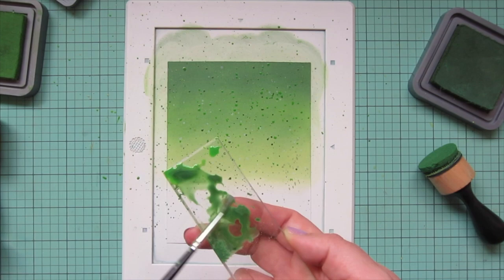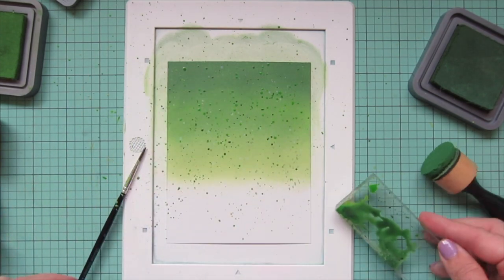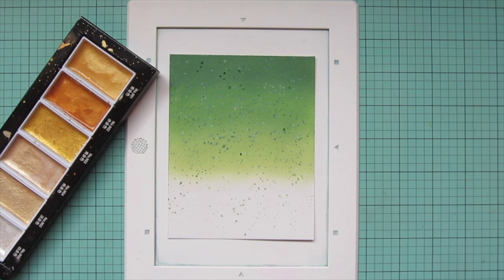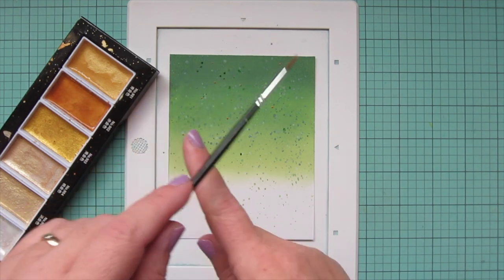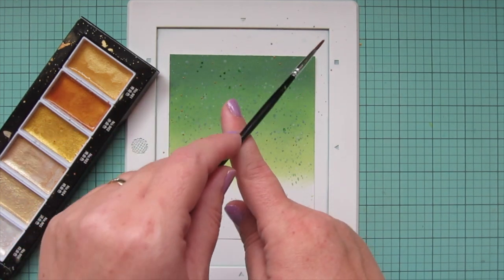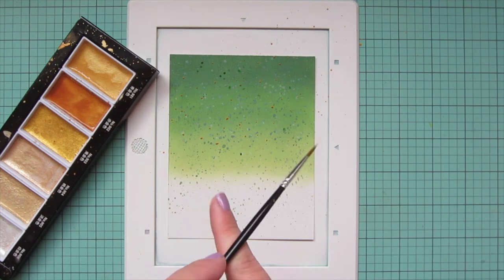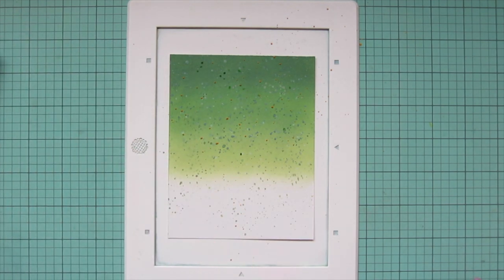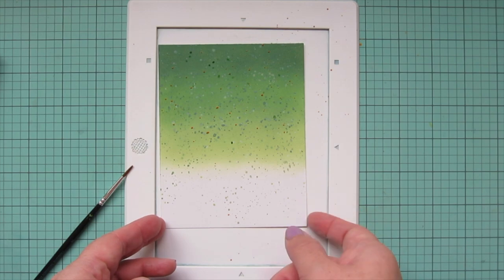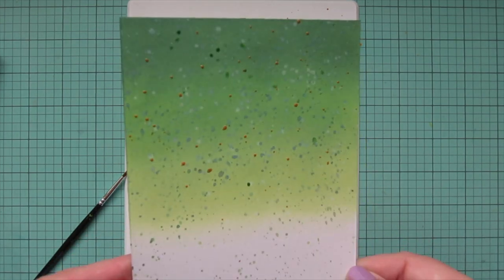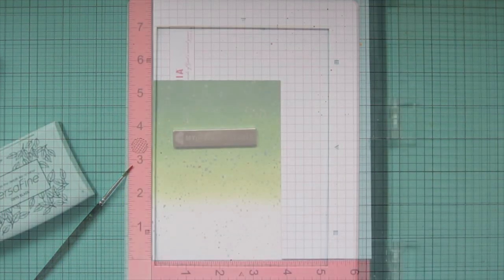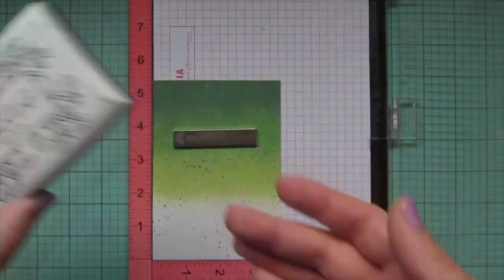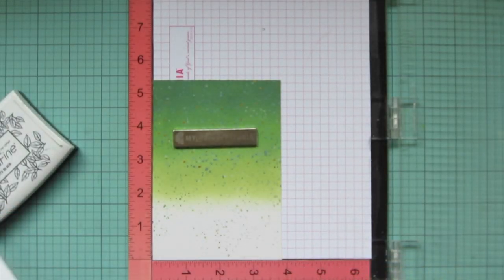And then once I'm happy with how that's looking I'm going to let that dry for just a minute and while that is drying I'm going to mix up some of my gansai tambi starry colors. I wanted to add in this coppery gold shade I thought that would tie in nicely with the brown of the branch and it's also going to give me a nice shine and that will be much more vibrant once it dries.